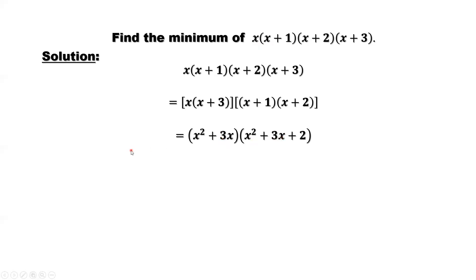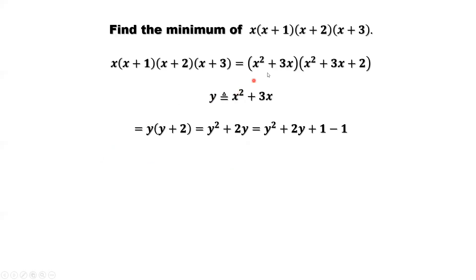Here is the tricky part. We define x squared plus 3x as y. Replace x squared plus 3x by y. We have y, y plus 2. We have extra 2 here. Simplify. We have y squared plus 2y equals y squared plus 2y plus 1, then minus 1.